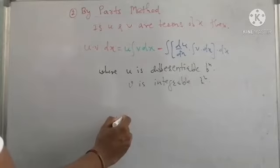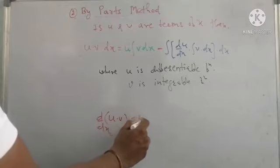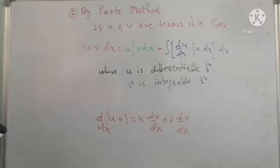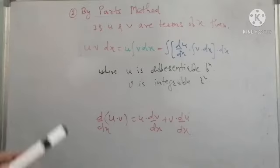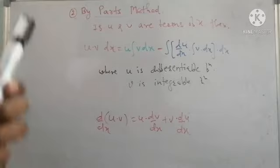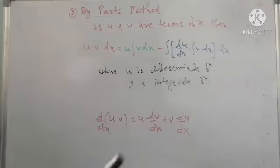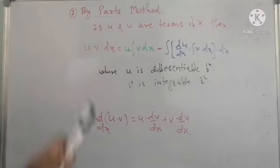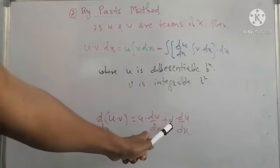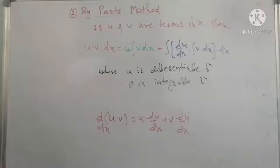In derivatives, if u and v are two functions, the product rule gives us the derivative of u·v with respect to x as u·(dv/dx) plus v·(du/dx). But in integration, there is no direct rule for the product of two functions of x, and we take the derivative of both functions.